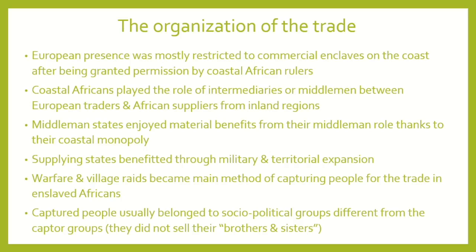The suppliers farther inland were acquiring people, taking them to the coast, and the coastal people were buying those enslaved people from inland regions and selling them to the Europeans. The middlemen people were able to create small states thanks to their coastal monopoly — they were the only ones who could trade both with people from inland and with the Europeans. The supplying states inland also expanded the size of their kingdoms. Enslaved people were obtained mostly through warfare and village raids — prisoners of war would be sold into slavery, and outside periods of war there were attacks against defenseless villages where people were captured.